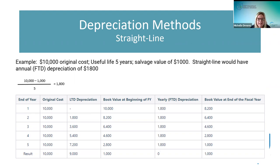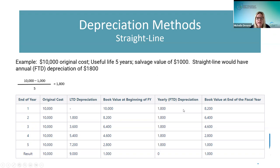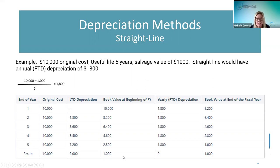Using the straight line calculation — assuming a full year of depreciation from the beginning of the fiscal year — the book value starts at $10,000 with nothing depreciated in the first year. At the end of the fiscal year when they close, it calculates $1,800, leaving a book value of $8,200. Each subsequent year subtracts another $1,800. Over five years that totals $9,000 in depreciation, leaving the $1,000 salvage value remaining.